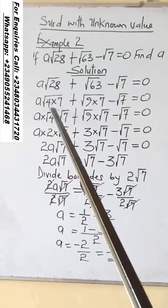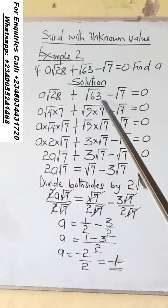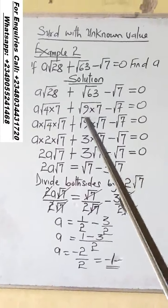In 28, 4 times 7. 4 is the perfect square. For 63, 9 times 7. 9 is the perfect square.